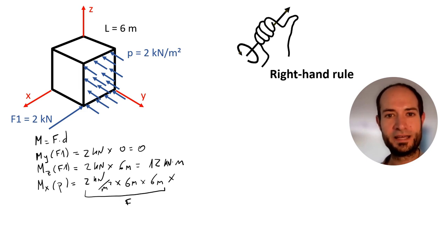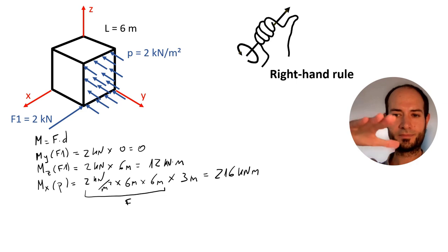So we will have 3 meter to x. So we have 2 times 6, 12 times 6, 72 times 3, 216 kilonewton meter. Positive or negative? Let's see. So we have the load horizontally and then rotates around x, and my thumb is pointing on the positive direction of the x-axis. Therefore, positive.